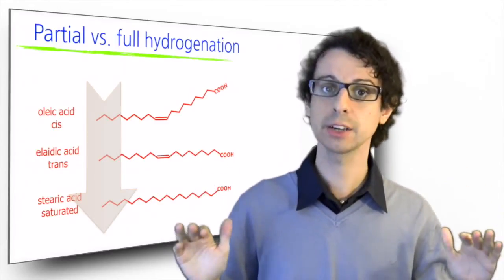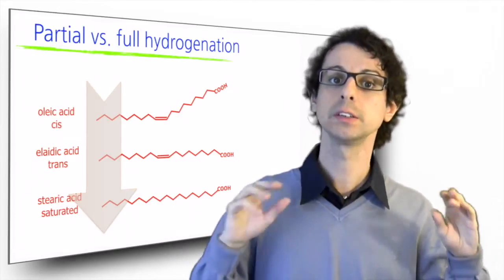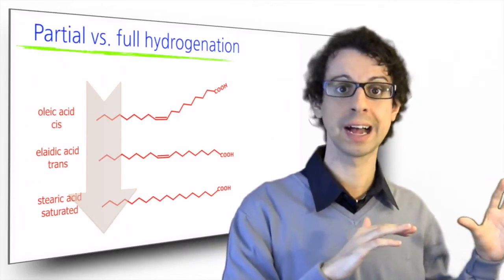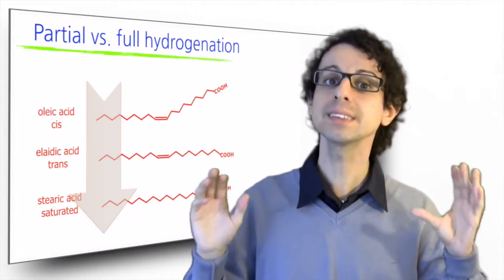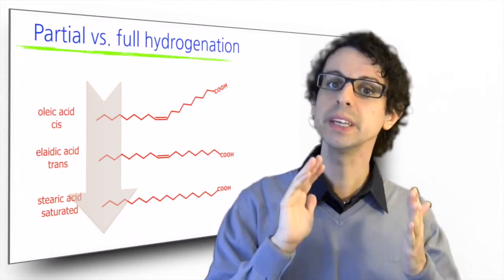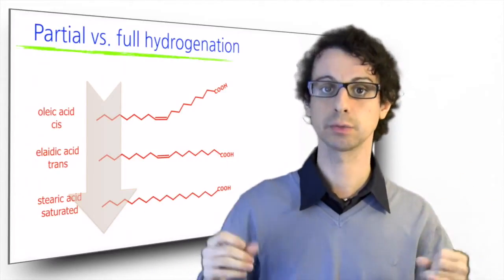You stop the hydrogenation at some point when you still have some unsaturated fats, some have become saturated, but some are left in that intermediate step, which is the trans form.